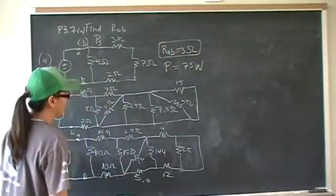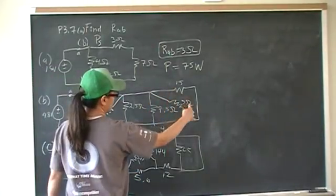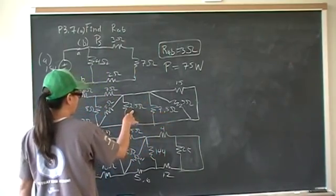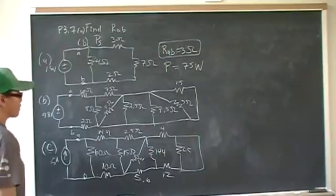So once you've replaced that with 15, you can see that this is in parallel with 5, which is in parallel with 7.5, which is in parallel with 2.5, which is in parallel with 5.